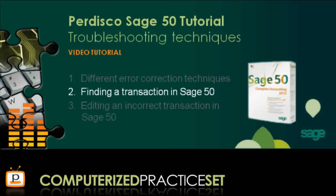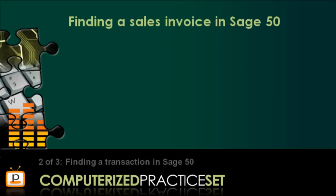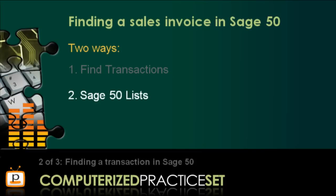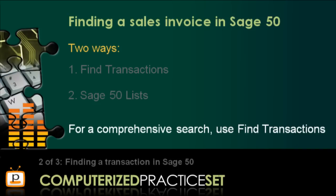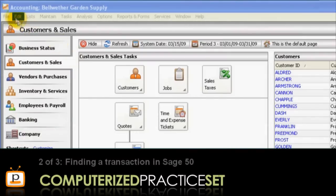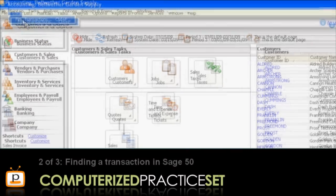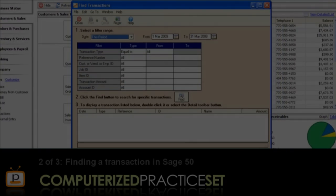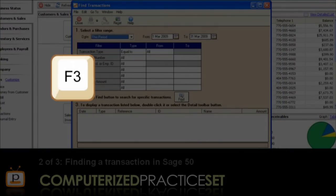Let's learn how to find a transaction in Sage 50. The problem we are trying to find relates to a sales invoice. Sage 50 provides two ways to find a sale transaction: using the Find Transactions window or one of the Sage 50 lists. If you want to conduct a comprehensive search, you should use the Find Transactions window. To access this window, go to the Edit menu and select Find Transactions, or just press F3 or Ctrl+F.